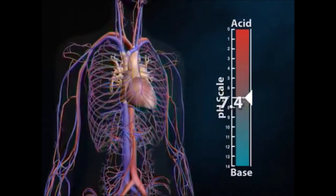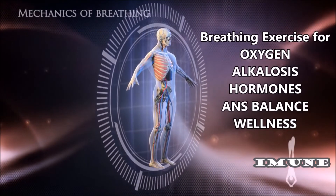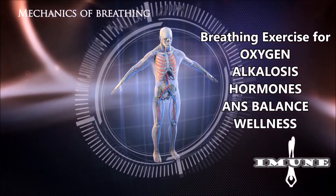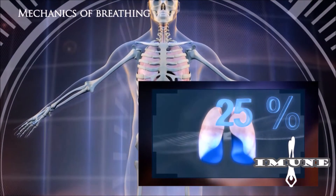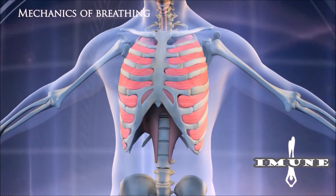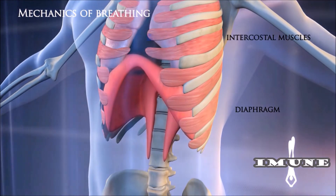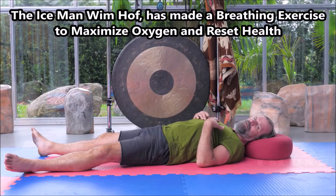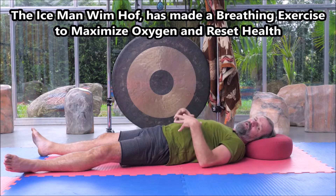Our machine can help — our machine really does work. We've been doing this for over 30 years with lots of different studies. But sometimes it takes more. We have a breathing exercise for when we have extreme problems with acidosis. We're going to give you a breathing exercise for oxygen alkalosis, hormones, autonomic nervous system balance, and wellness. Most people are only getting 25% available oxygen, some even less than 10% — smokers, etc. We're going to talk about a complete breathing exercise, akin to the work of the Iceman, Mr. Hof. With three parts — actually the whole body, not only the lungs are breathing — we are able to manipulate.